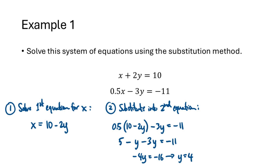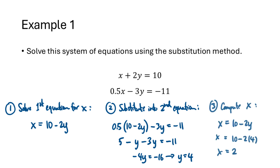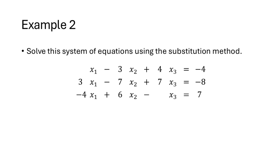That gives us x equals 10 minus 2y, and then we substitute that into our second equation. That gives us 0.5 times the quantity (10 minus 2y) minus 3y equals negative 11. We simplify and eventually get y equals 4. We take that value y equals 4, substitute it back into our equation for x, and get x equals 2. But with more complicated examples like three equations and three variables, the substitution method becomes much more difficult.